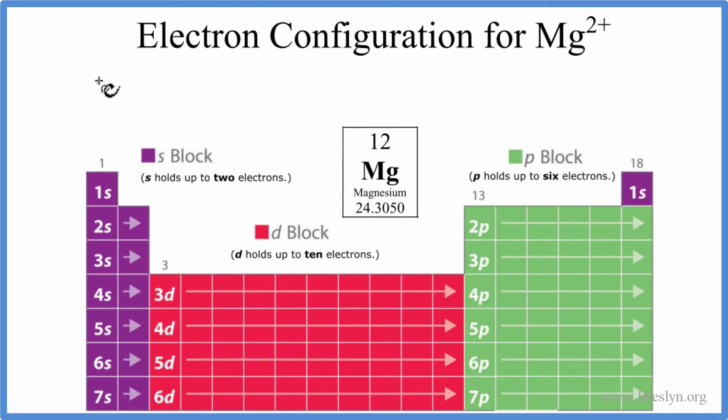So for magnesium, just Mg, we start with 1s. The s orbitals, they can hold up to 2 electrons. So we'll put 2 electrons in there. We have 1s2. We've used 2 electrons. We have 12 total. So we have 10 left.